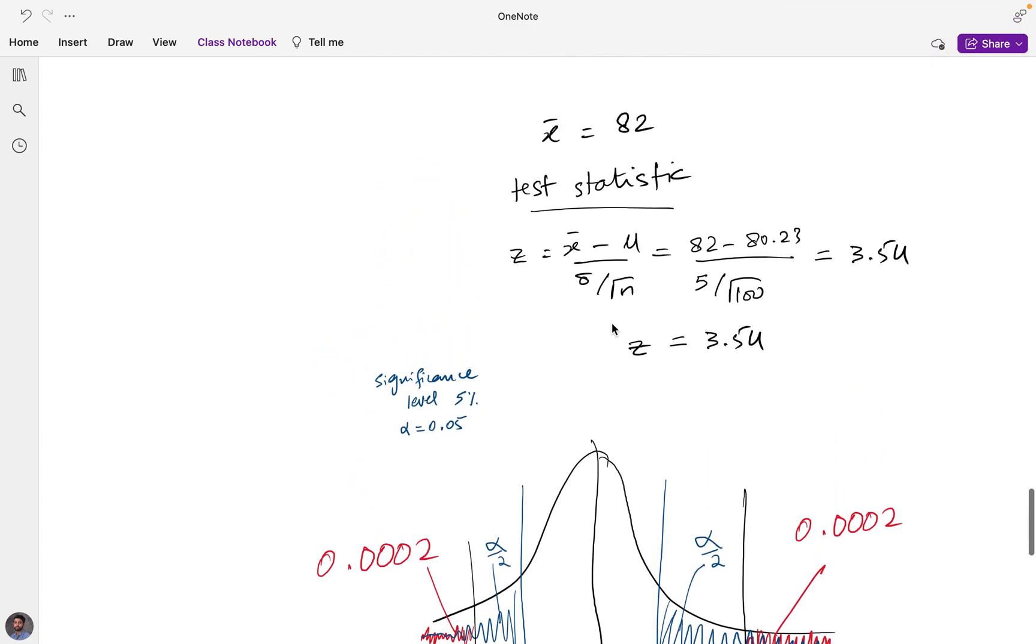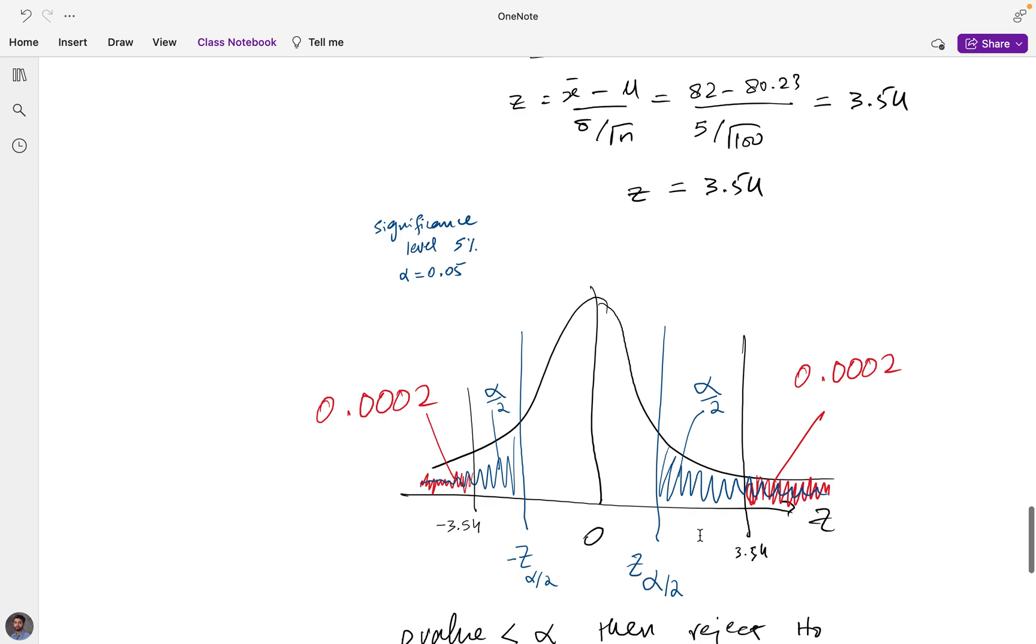But remember, this does not change our test statistic. The test statistic remains the same. It has nothing to do with the value of the alternative or the way we have defined our alternative hypothesis. So we still have the z-value here set up as 3.54 and negative 3.54. The probability area that we computed corresponding to 3.54 is 0.0002. That remains the same as it is.